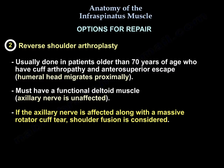The second option is reverse shoulder arthroplasty, usually done in older patients — more than 70 years old — with cuff arthropathy and anterior superior escape, meaning the humeral head migrates proximally. You must have a functional deltoid, meaning the axillary nerve must be working. If the axillary nerve is not working and there is a massive cuff tear, then you are looking at shoulder fusion.